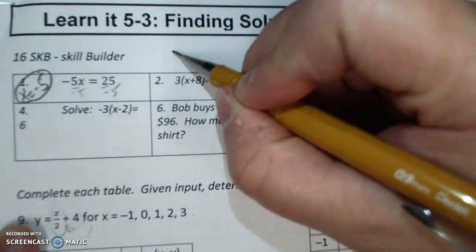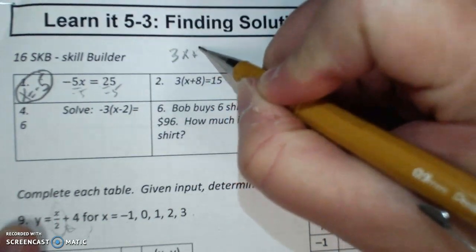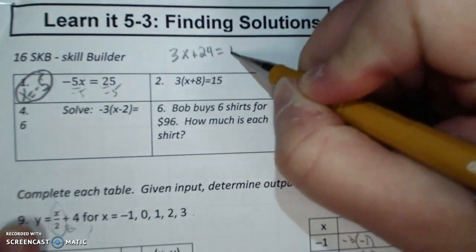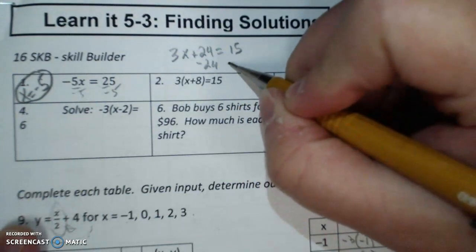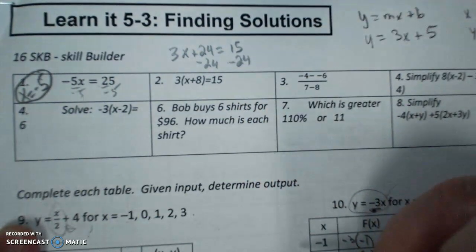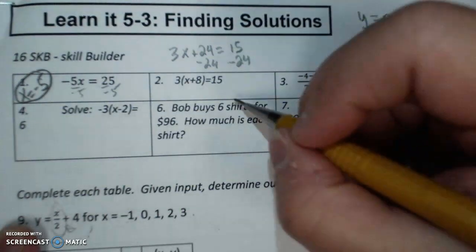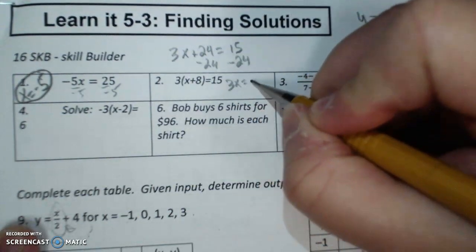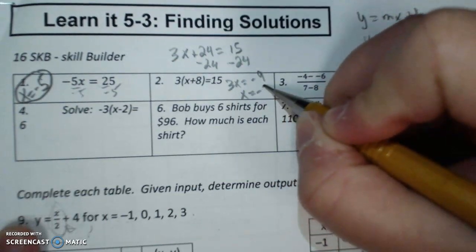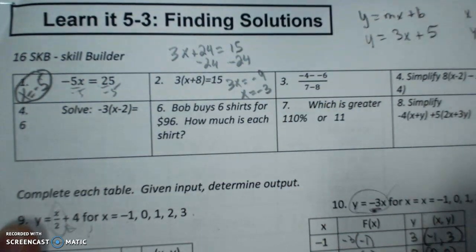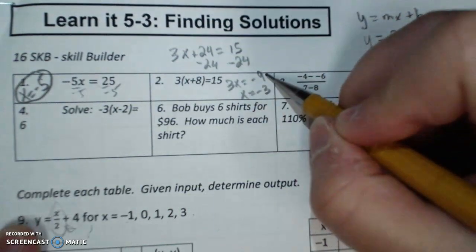Here I'm going to distribute 3X plus 24 equals 15. Subtract 24 from both sides. I get 3X equals negative 9. X equals negative 3 because I divided both sides by 3.